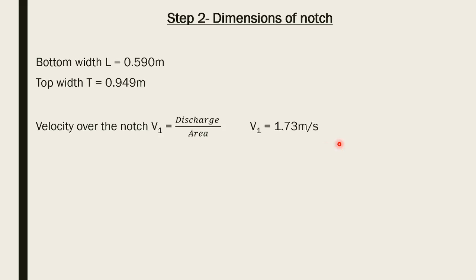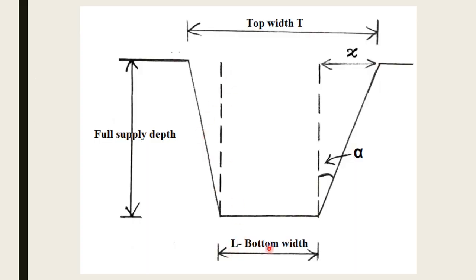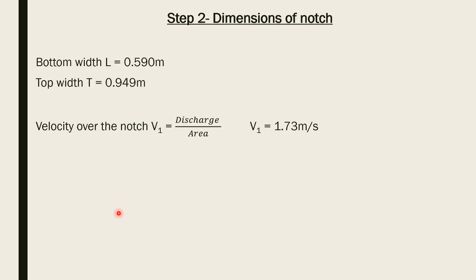After getting all the dimensions of the notch, the velocity over the notch v1 can be calculated. Velocity v1 = discharge / area, where area = (bottom width + top width) / 2 × full supply depth, giving the trapezoidal cross-sectional area. The result is v1 = 1.73 m/s.